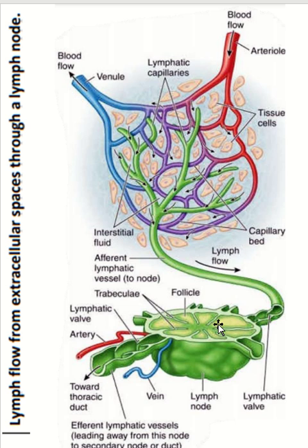Within the lymph node there are many types of immune cells present. For example, B cells, which produce antigen and differentiate into plasma cells to initiate humoral immune response. T cells assist in cell-mediated immunity. Macrophages also digest pathogens. Dendritic cells capture antigen and present them to T lymphocytes. Reticular cells provide structural support, forming a fibrous network within the lymph node.